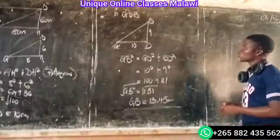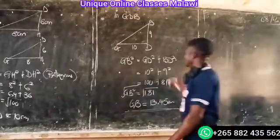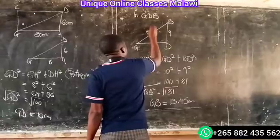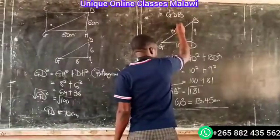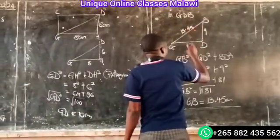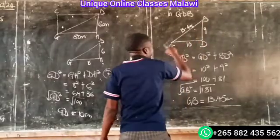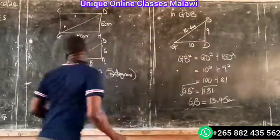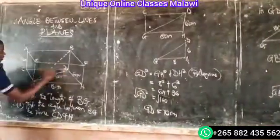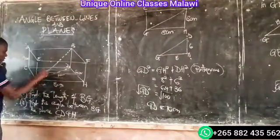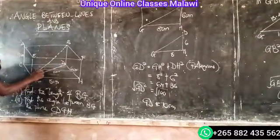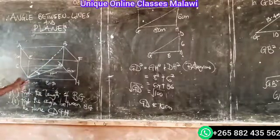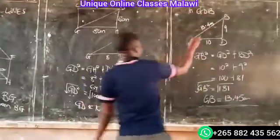Now let's do part B. I will put the angle between BG and the plane. I will put an angle here, which is BGD.